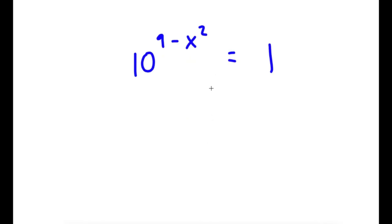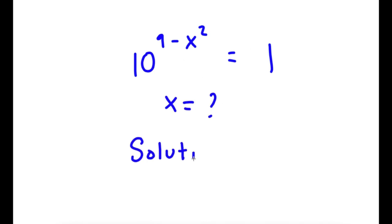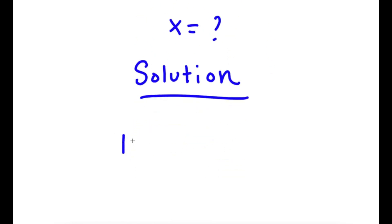In this problem, I have 10 to the power of 9 minus x squared is equal to 1. I obviously want to find the value of x. So I start with 10 to the power of 9 minus x squared is equal to 1.